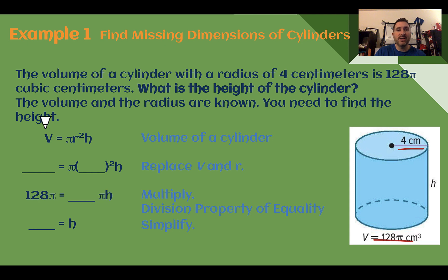Let's plug those values in. So the volume was 128π. The radius was 4. Let's simplify this out. So 4 squared is 16. Then to get h by itself, we're going to divide both sides by 16 and by pi.